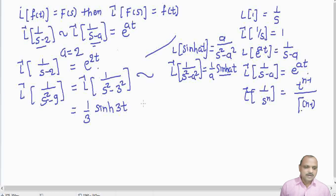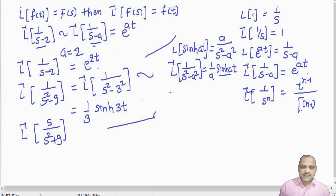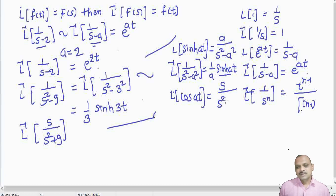Let us see one more example. Let us find L⁻¹{s/(s²+9)}. We recall the standard formula: L{cos(at)} = s/(s²+a²), so L⁻¹{s/(s²+a²)} = cos(at).